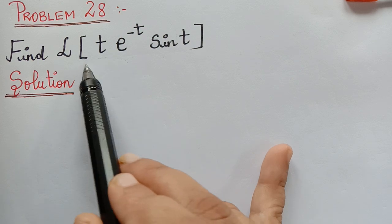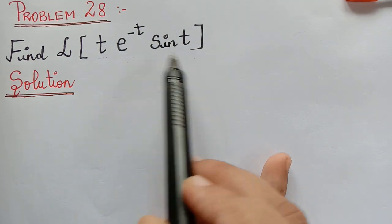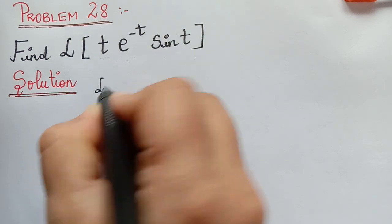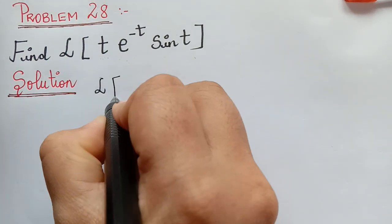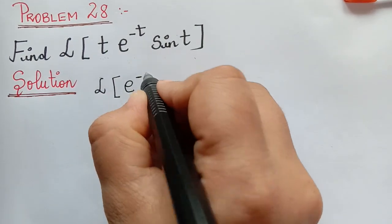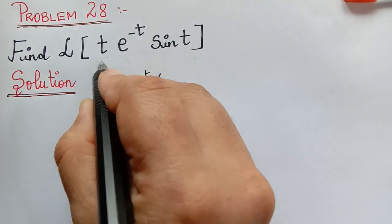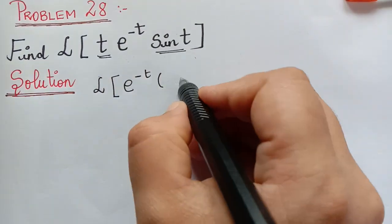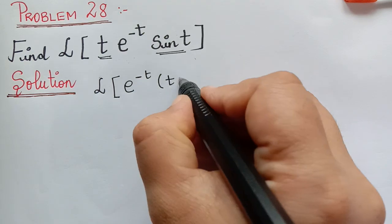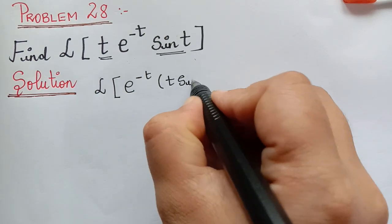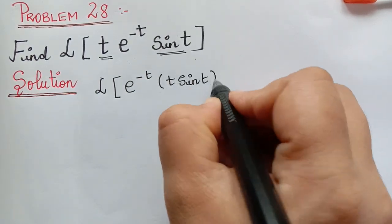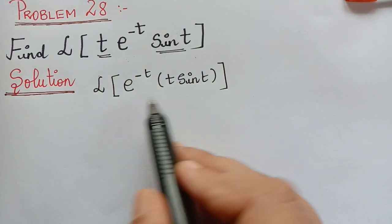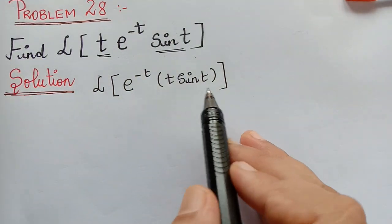I would suggest to always rewrite this problem so that we can apply the first shifting theorem at the beginning. This can be rewritten as L{e^(−t) · f(t)}, where f(t) = t·sin(t). So the first step is to rewrite it in such a manner that we can apply the first shifting theorem.